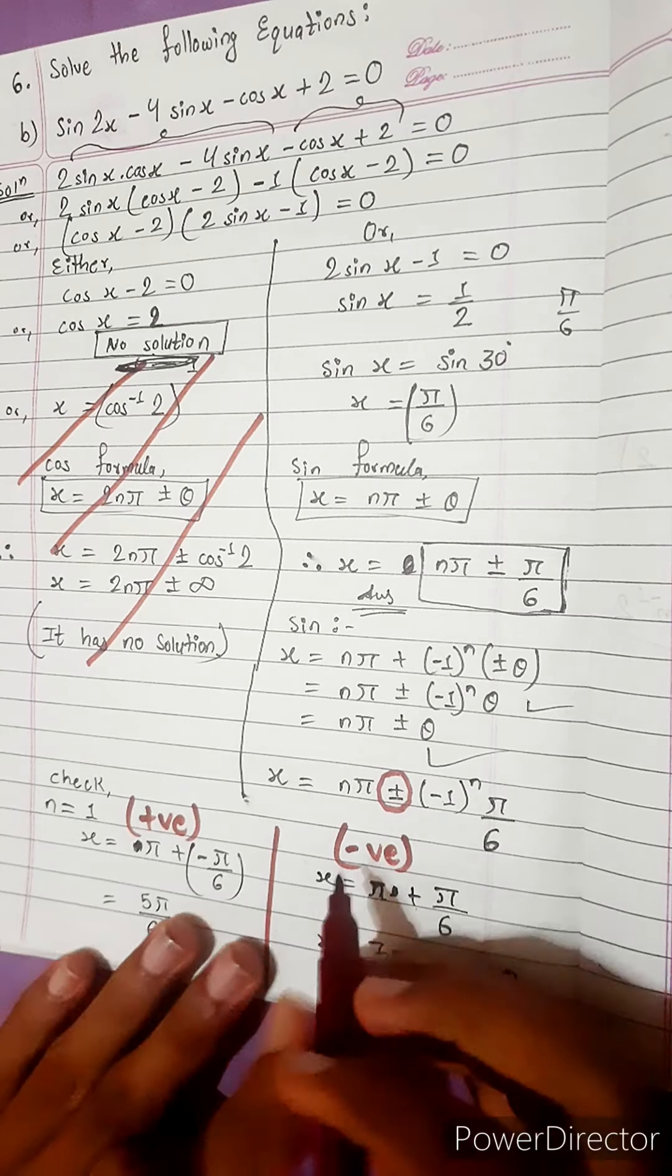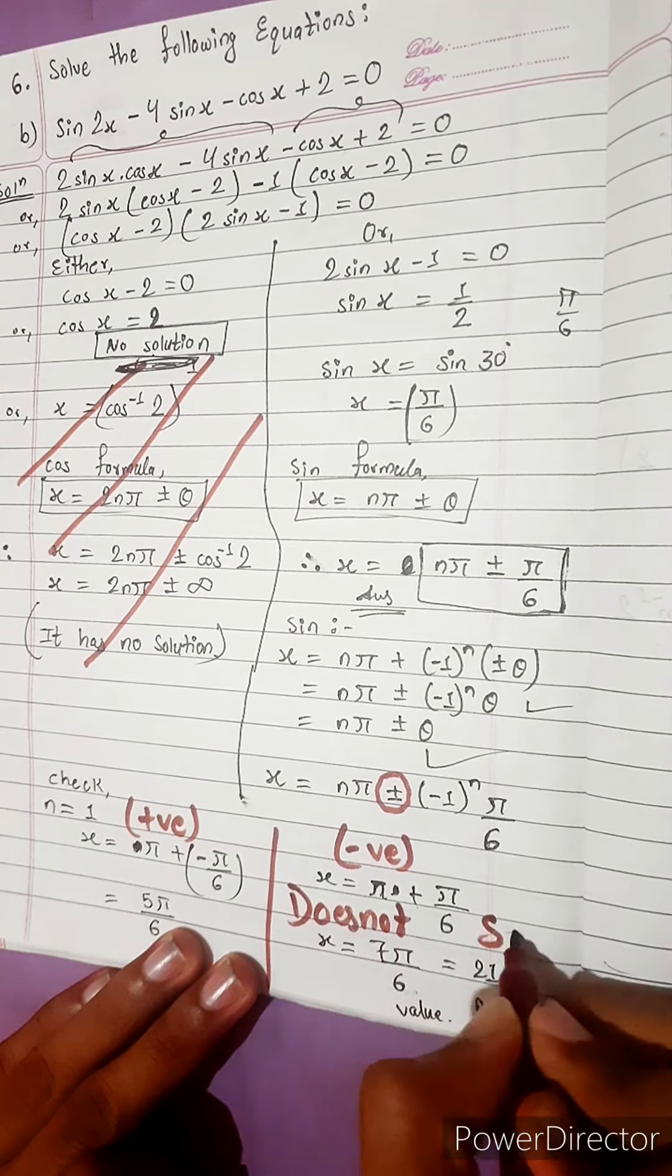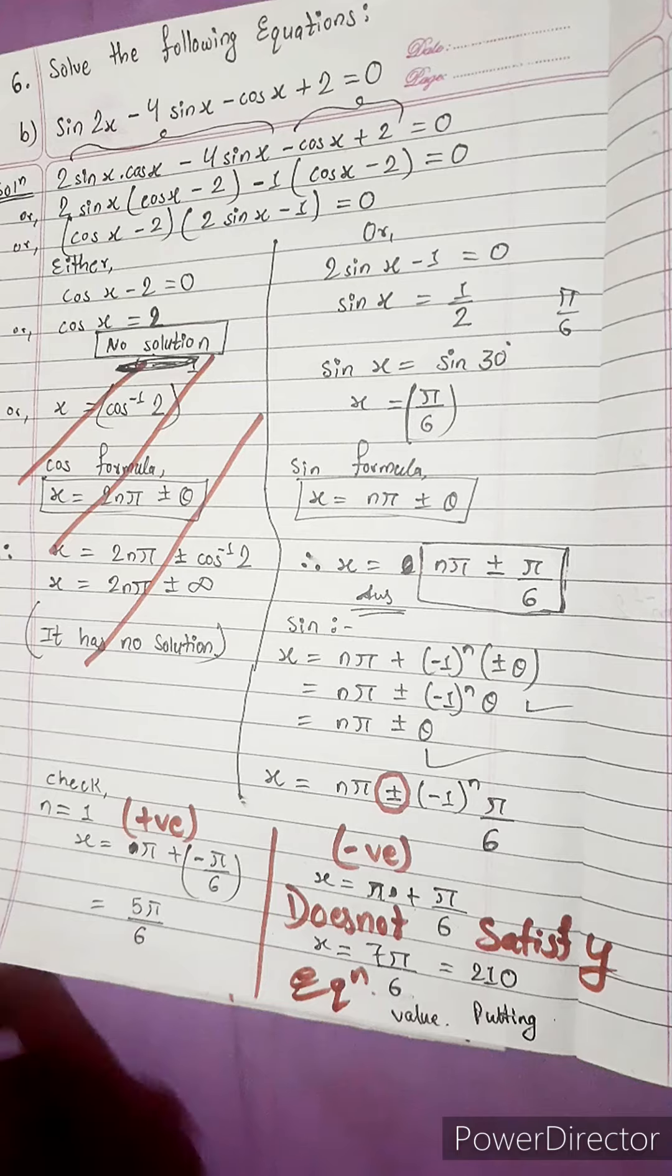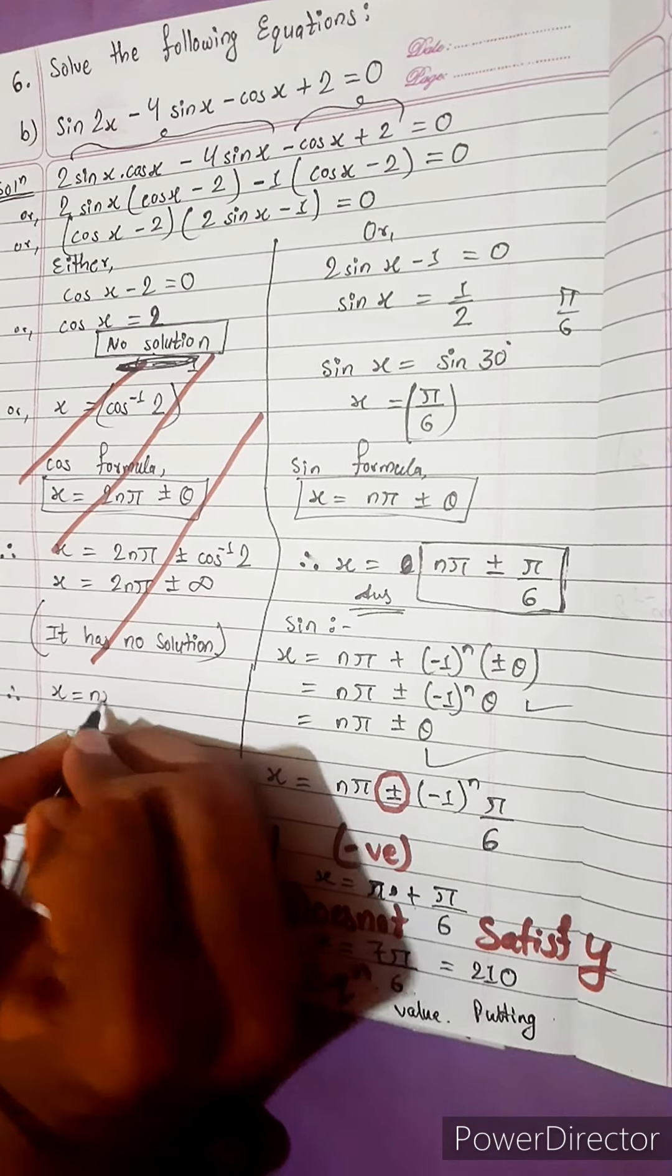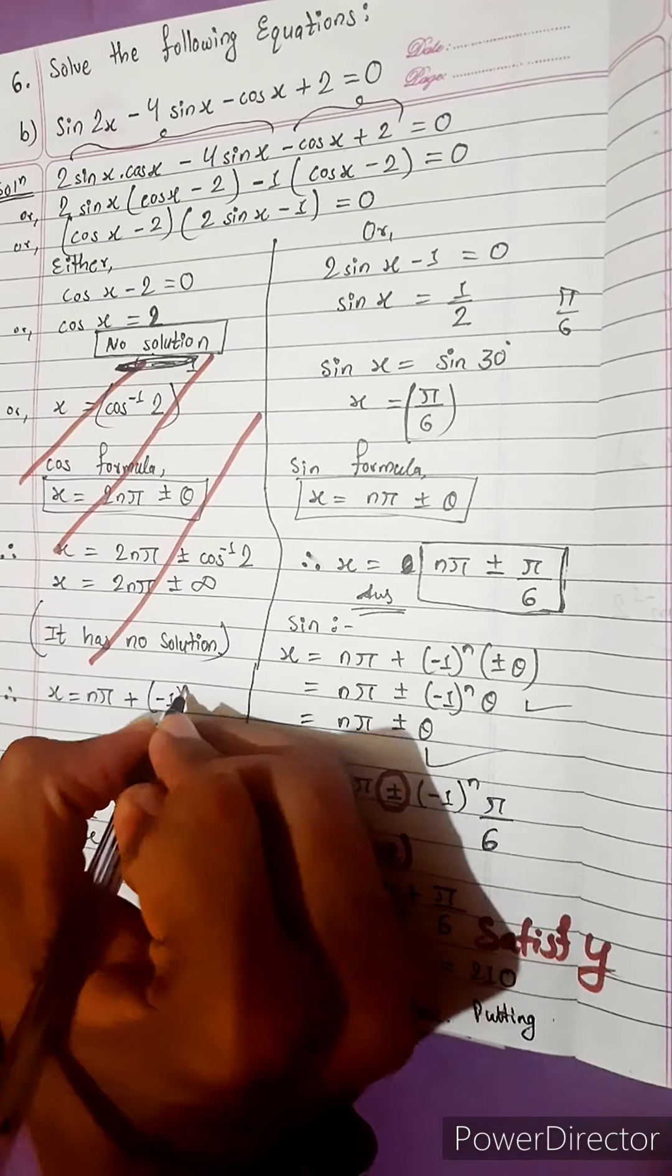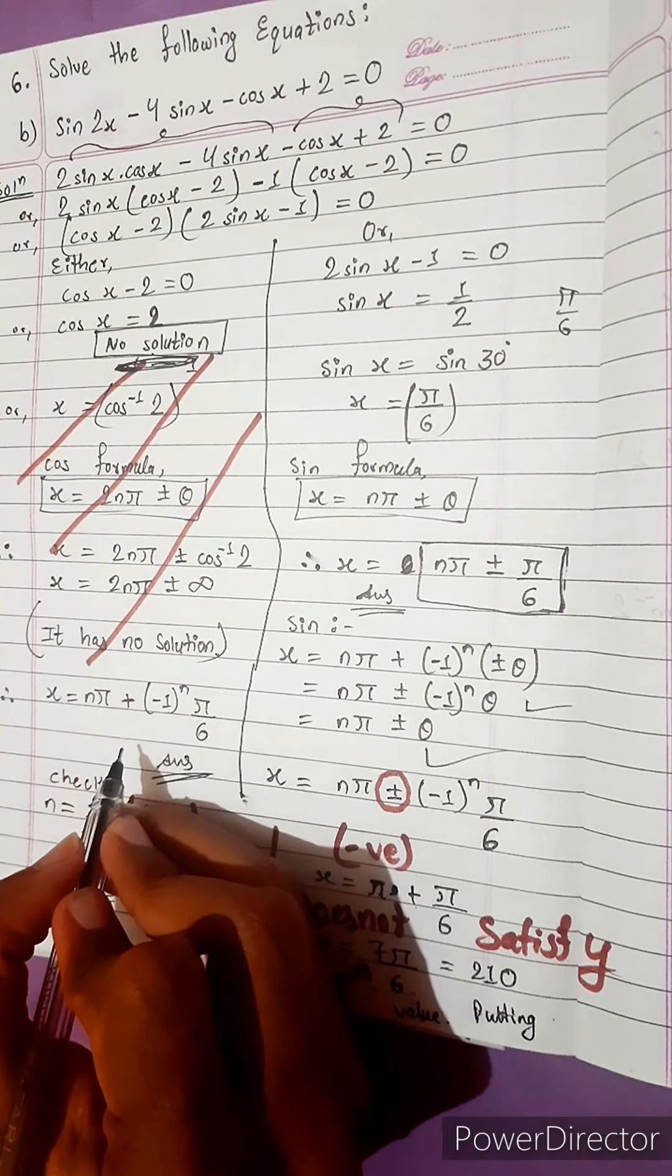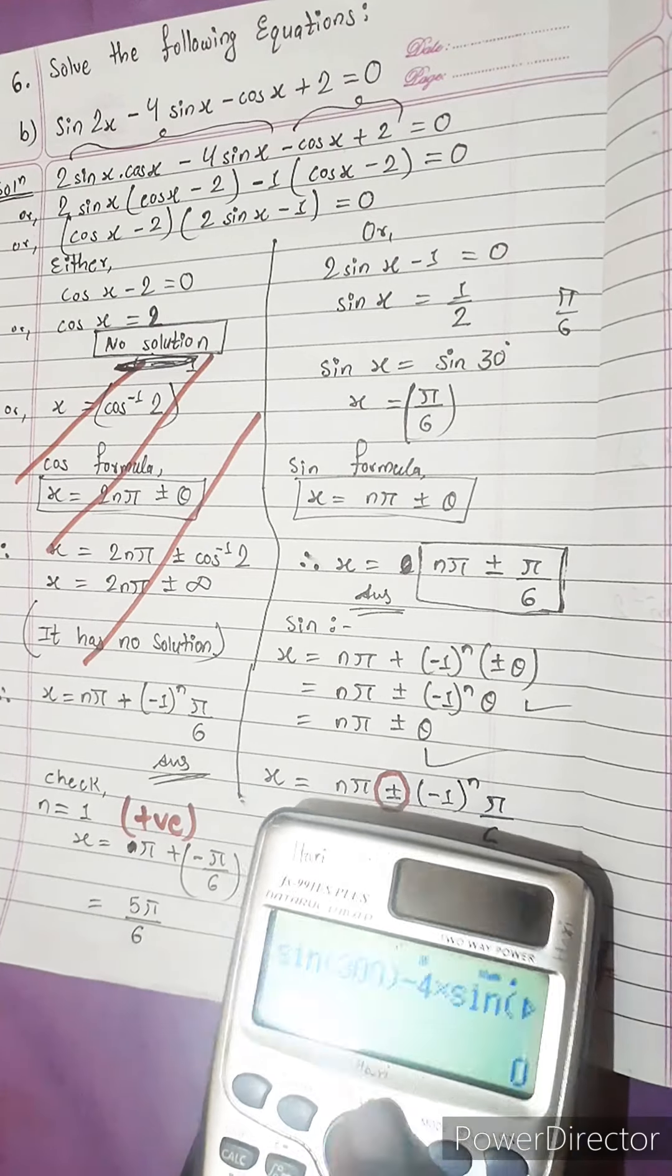Cos 210 plus 2 is something else. So it does not satisfy. So this negative term does not satisfy equation. So negative is not written. Therefore, x equals to n pi only plus, minus 1 power n, pi by 6. So only plus is given as answer.